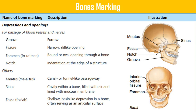Depressions and openings for the passage of blood vessels and nerves include groove, fissure, foramen, and notch. A groove is a furrow; a fissure is a narrow slit-like opening; a foramen is a round or oval opening through a bone; a notch is an indentation at the edge of a structure. A meatus is a canal or tunnel-like passageway; a sinus is a cavity within a bone filled with air and lined with mucous membrane; a fossa is a shallow basin-like depression in a bone, often serving as an articular surface.